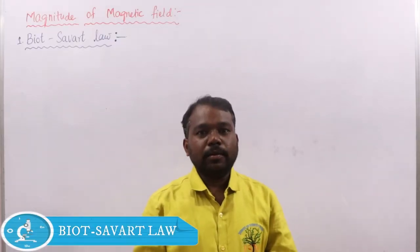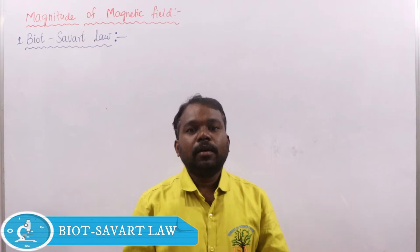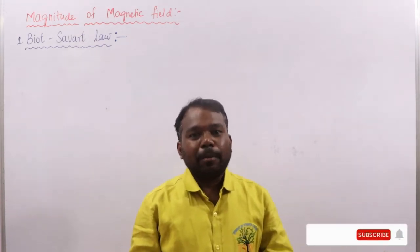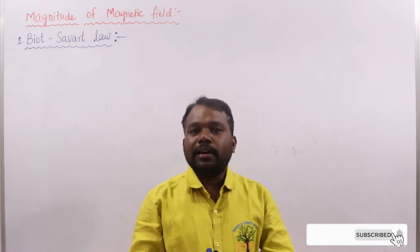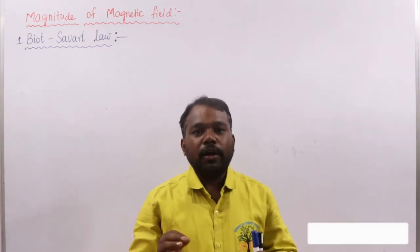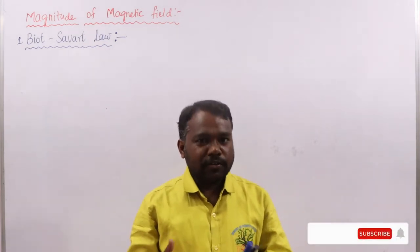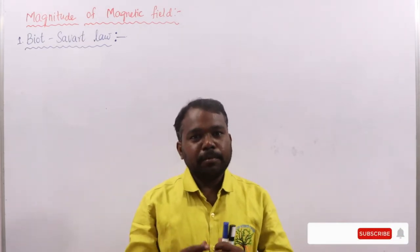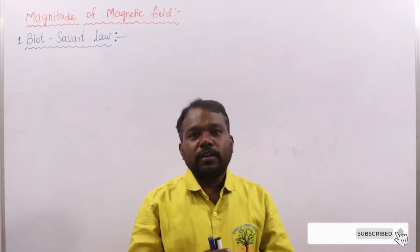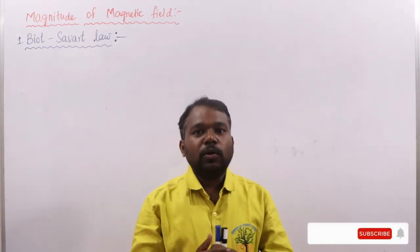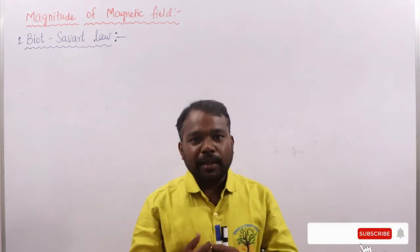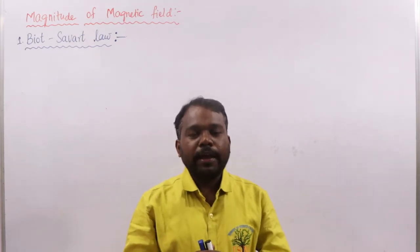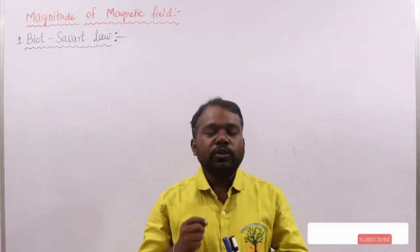Hello viewers, welcome to JSM. In the previous video, we introduced the magnetic effect of electric current with the help of Oersted's experiment, and we also saw the direction of magnetic field using different rules: the snow rule, right hand rule, right hand thumb rule, and right hand screw rule.